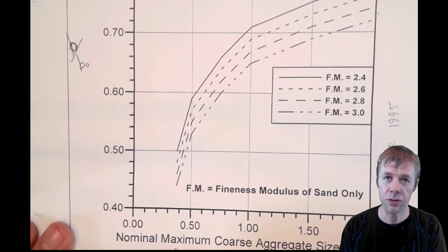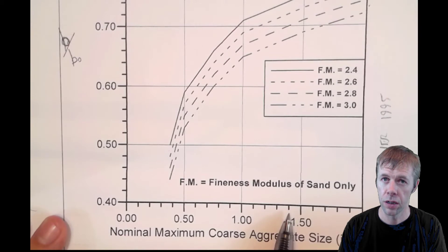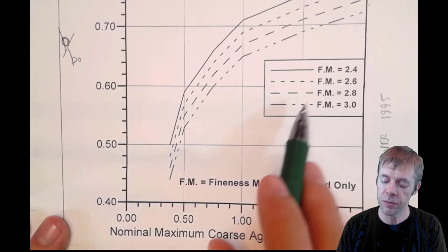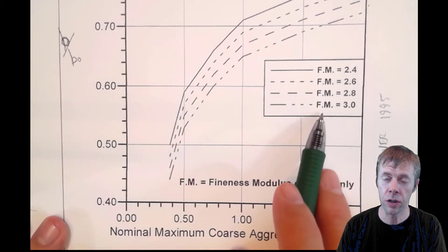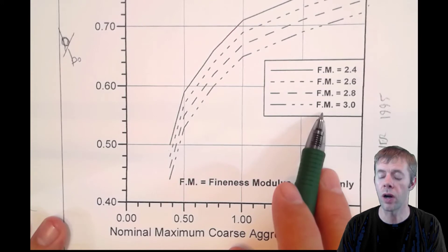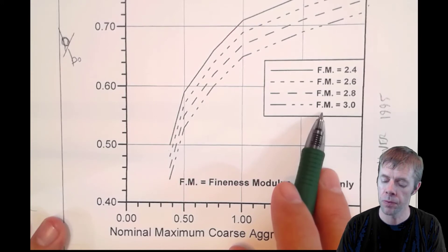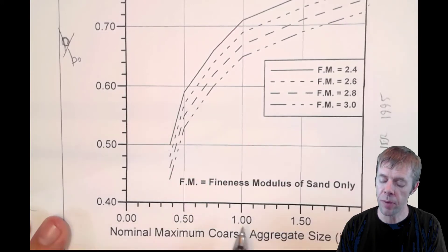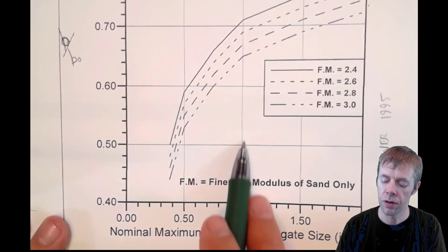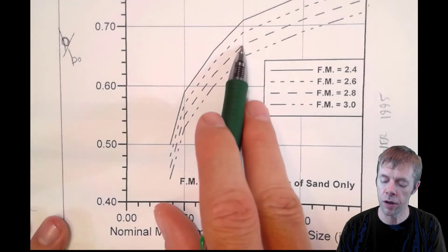Here's your nominal maximum coarse aggregate size down here. The fineness modulus of your sands are up here, and you can interpolate between these two lines if you need to.